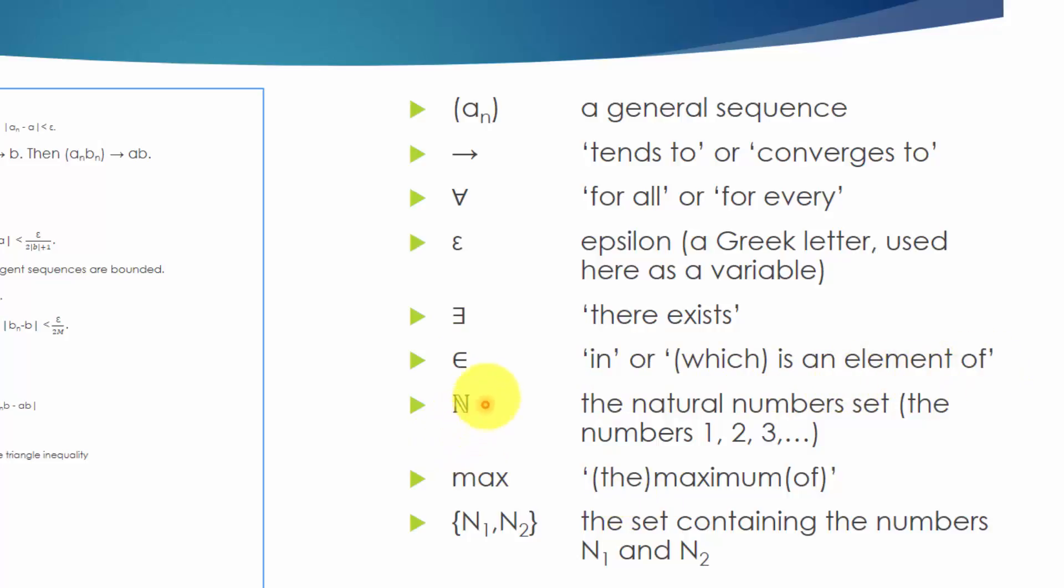This set membership symbol is read as in or is an element of. This big N represents a natural numbers set, which includes 1, 2, 3, and so on. Max means the maximum of. And lastly, the curly brackets represents a set. Here, it is a set that contains the numbers N1 and N2.